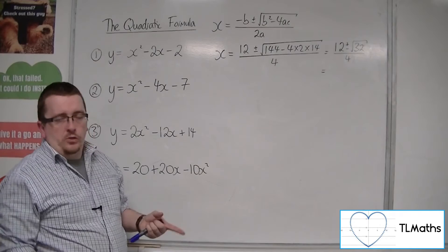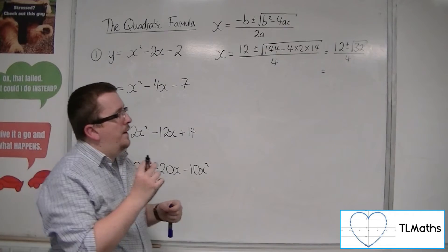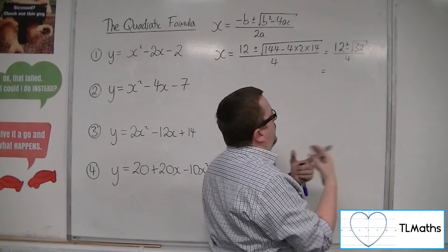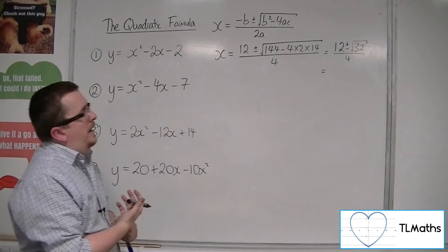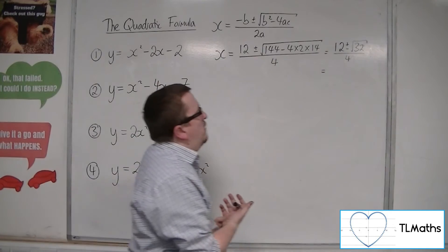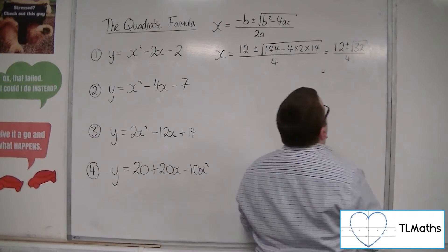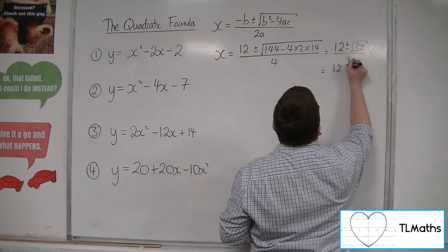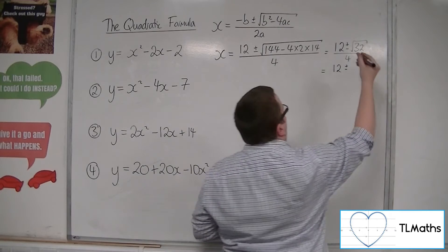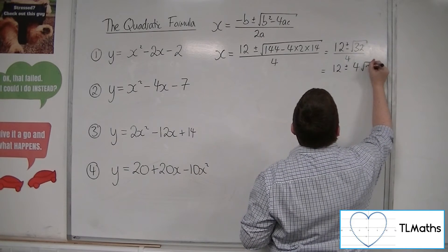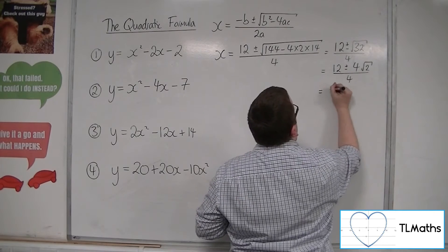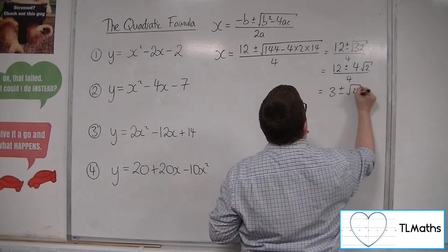Now, root 32, you can divide through by 4. So you can take the square root of 4 out, leaving me with, well, you can actually take out 16, can't you? So 12 plus or minus 4 root 2. So that's 3 plus or minus root 2.